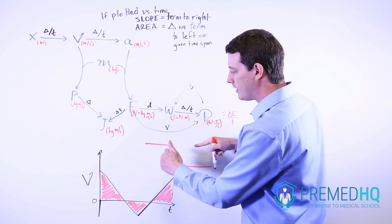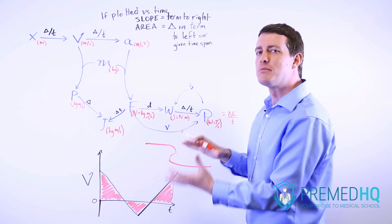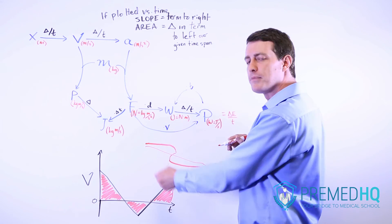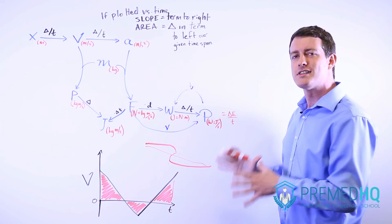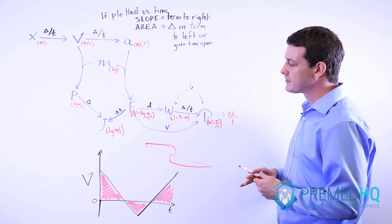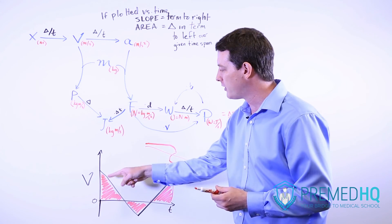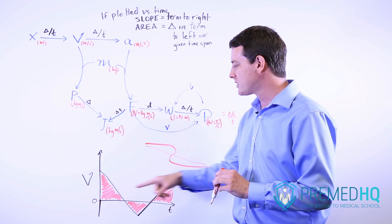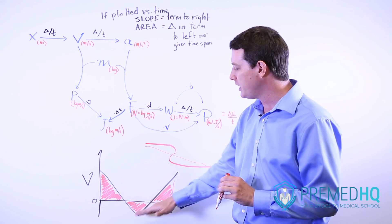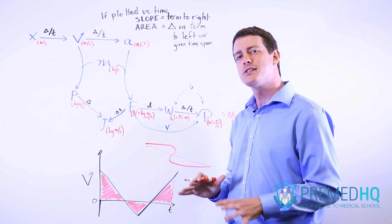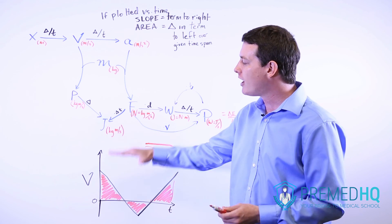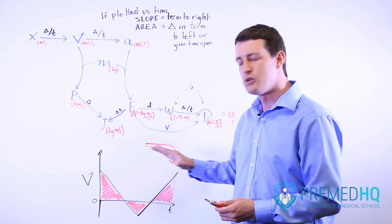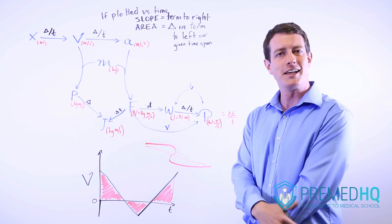For displacement, you take the two positive movement periods and subtract the area of the negative component. So the total distance is all three areas added together, while displacement is the two positive components minus the negative component — meaning displacement will be smaller than total distance traveled. In summary, distance cares about the total area between the curve and zero, while displacement cares about the signed area: positive regions minus negative regions.